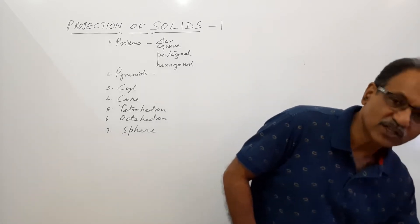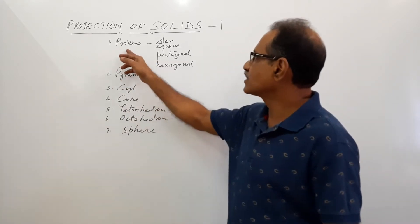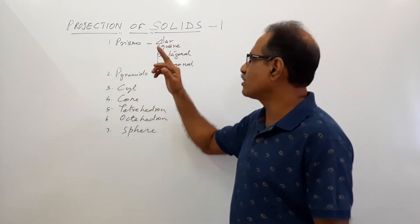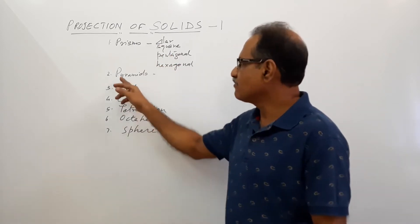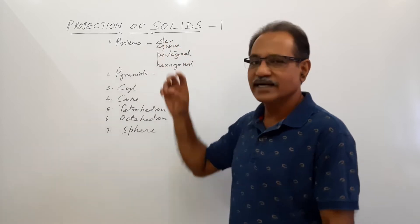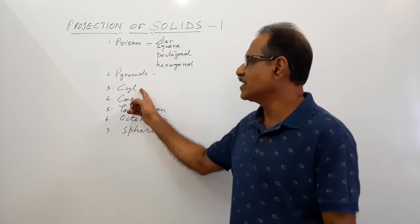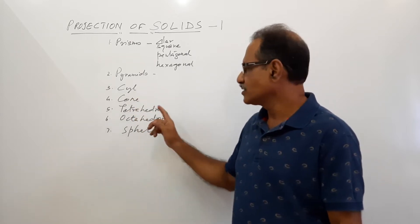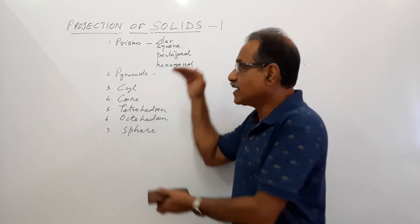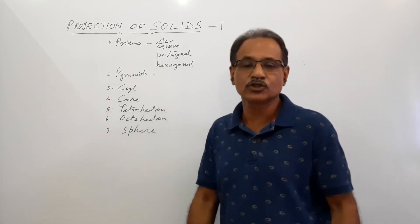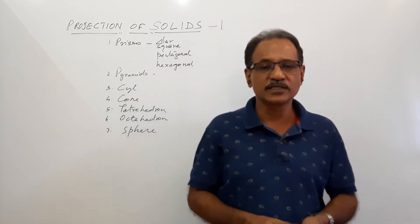To start with, we have prisms: triangular prisms, square prisms, pentagonal prisms, and hexagonal prisms. Then we have pyramids — same set: triangular pyramid, square pyramid, pentagonal pyramid, and hexagonal pyramid. Then cylinder, then cone, tetrahedron, octahedron, and sphere. And you can have combinations of these also — one object sitting over another.